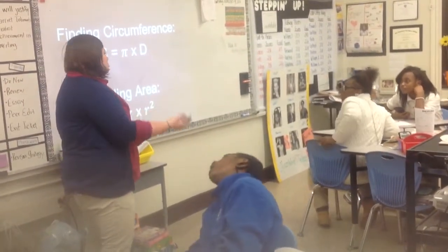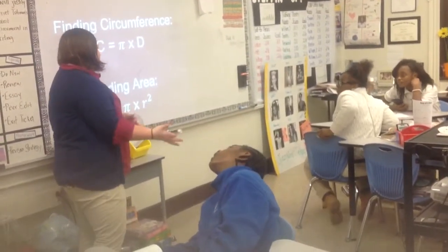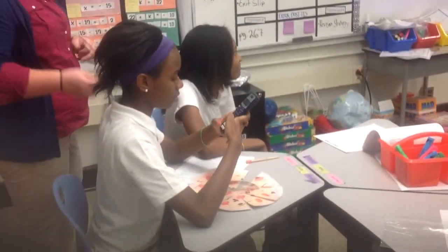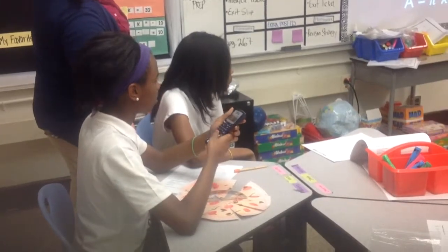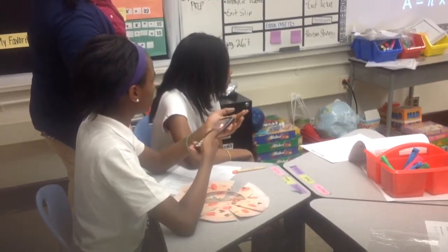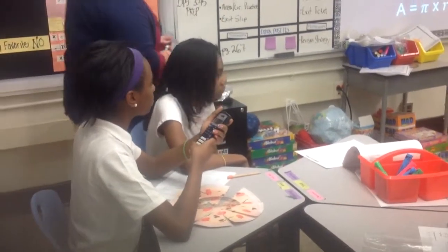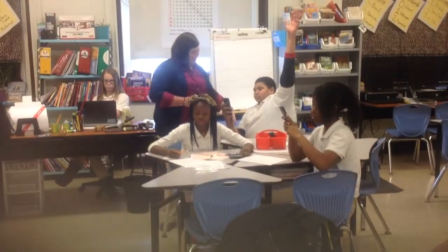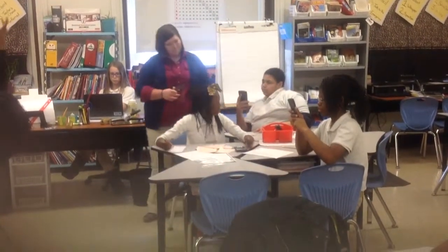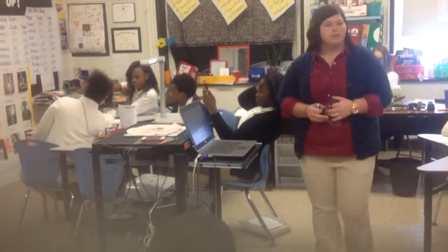Half — half of what? Half of the circle. So if this is radius, how would I show the diameter — like, explain to me what you mean by that? You will cross — across, like this? Or what? Like, horizontal — or horizontal, like this?